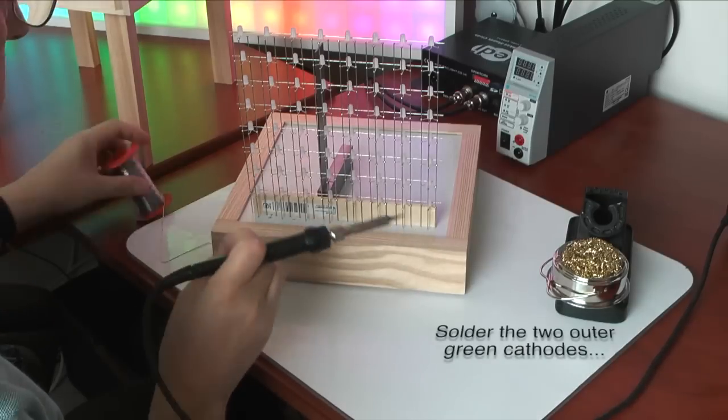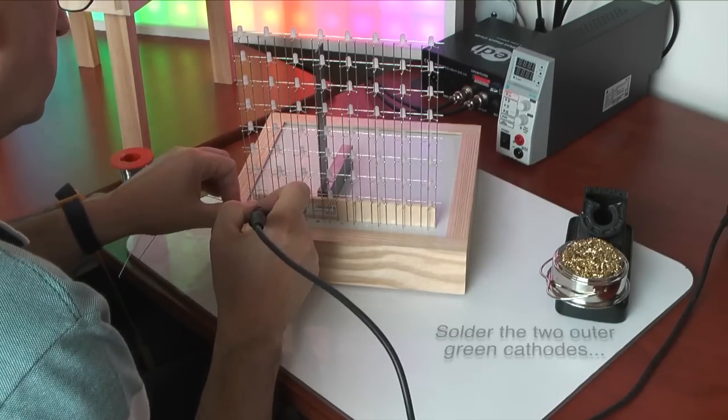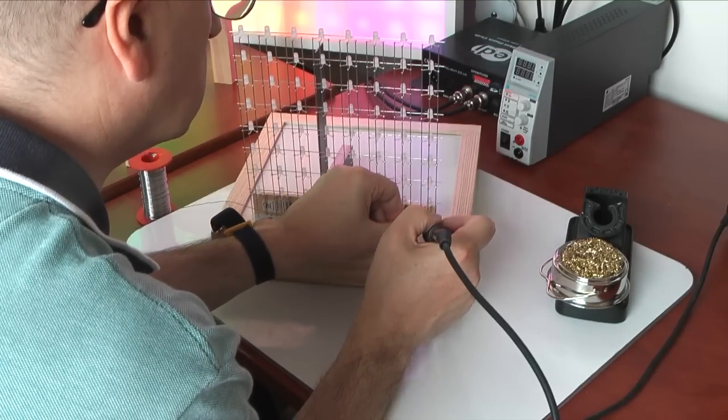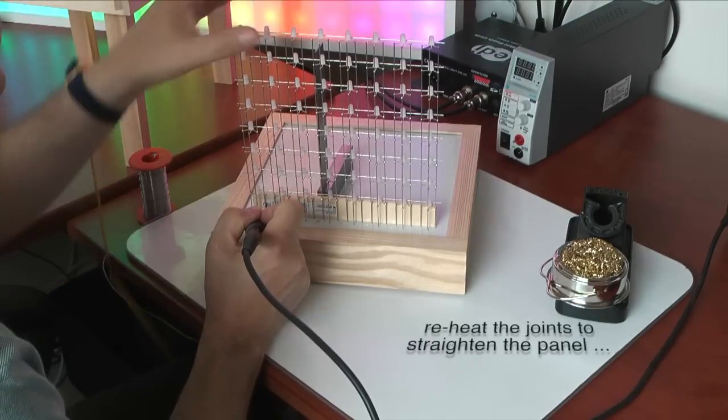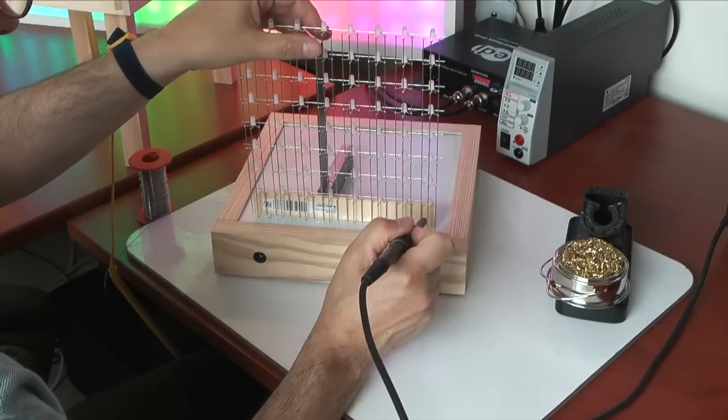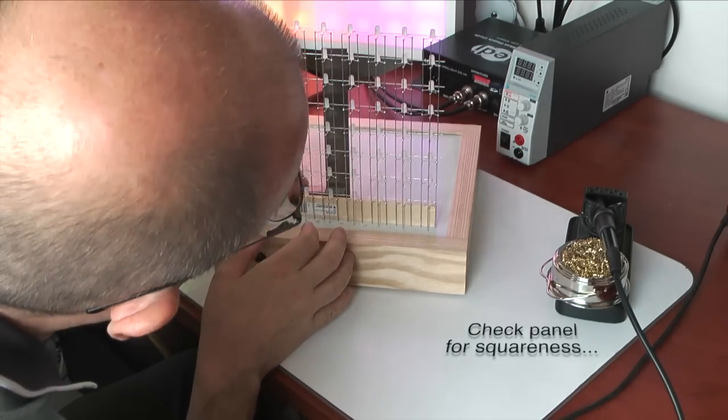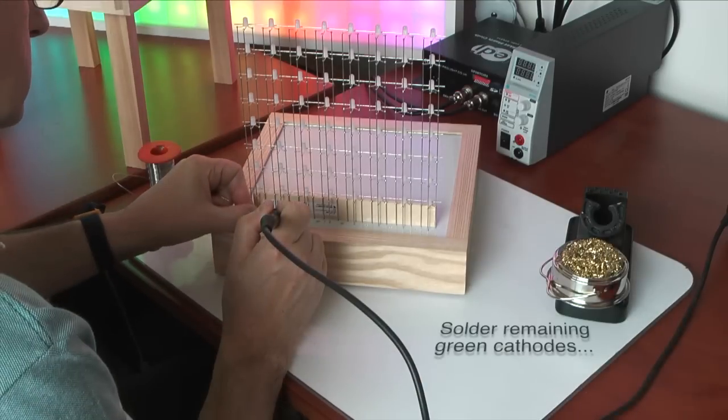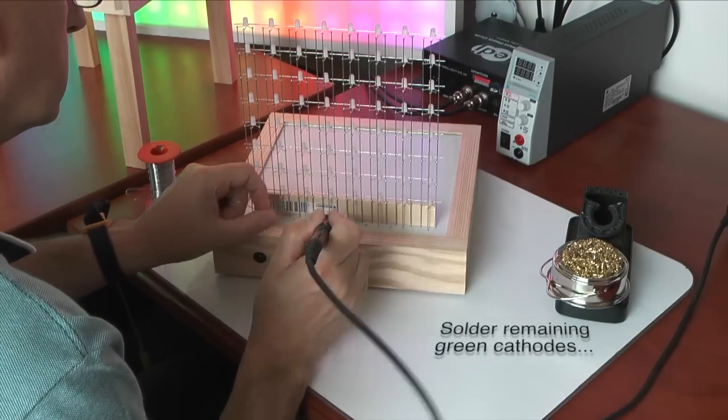I then solder the two outermost green cathode wires to stabilize the panel. But I did have to reheat the joints to make sure that the panel was actually set perpendicular. Next I solder the remaining green cathode wires.